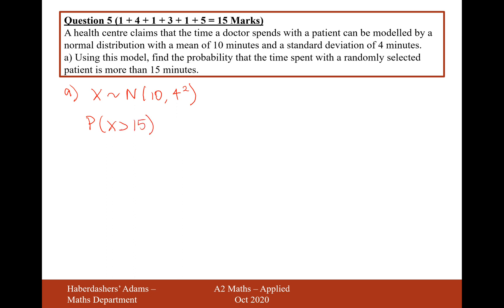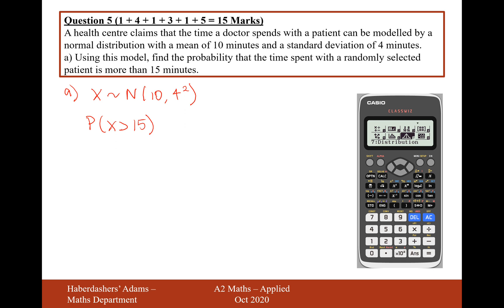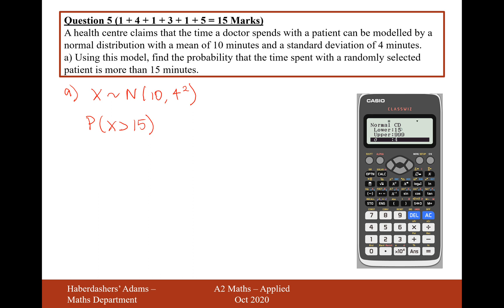So this is a standard question for the calculator. Go to mode 7 on the calculator, hit mode 2 for normal CD, and you want to input the variables of 15 being your lower bound. You don't really want an upper bound, so type something like 999 or 9999, standard deviation of 4, mean of 10, and press enter, and you get your answer. Write it to three significant figures: 0.106.